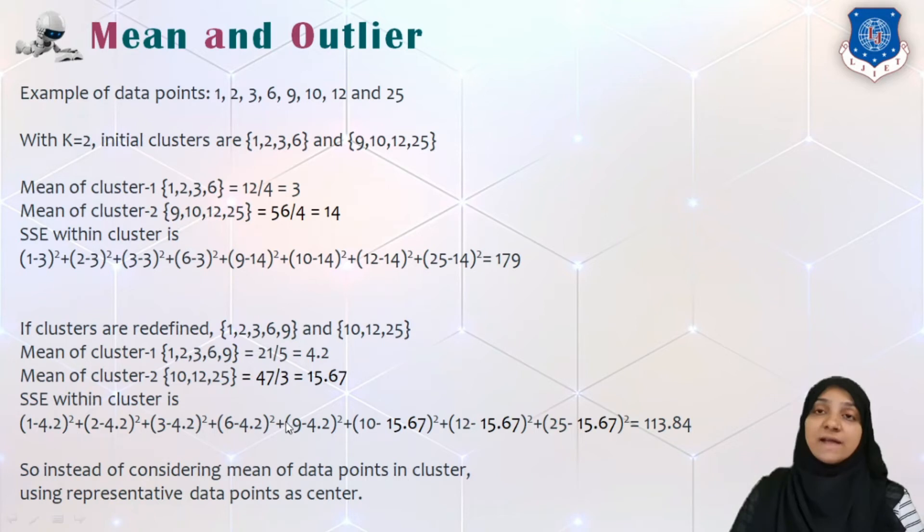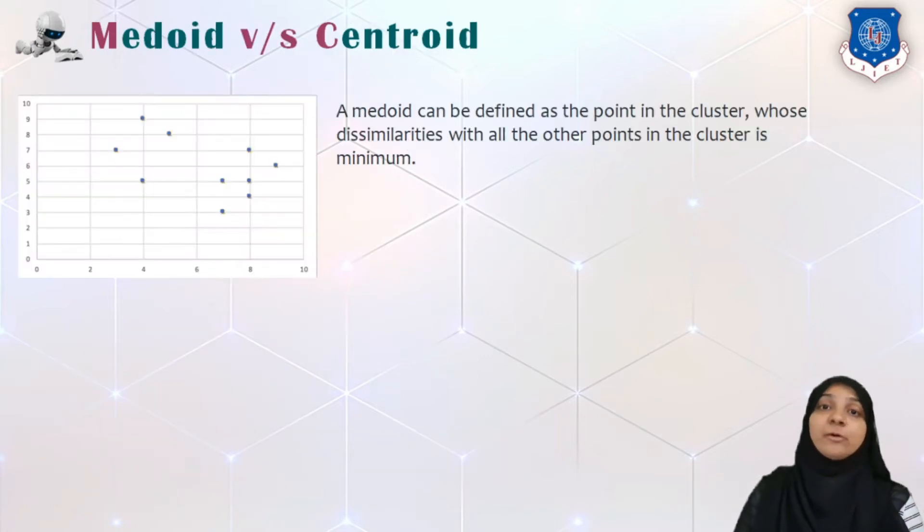So here as you can see, a slight change in one data point from one cluster to another is now drastically changing or affecting our mean as well as the sum of squared error term. So in this way, instead of using mean as a center of a cluster, we will now use one of the data point itself as representing the center of a cluster, and that particular method is called as medoid method.